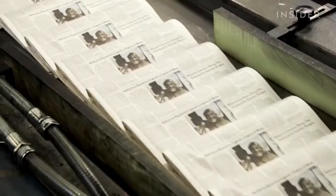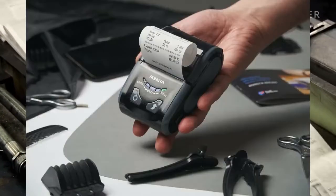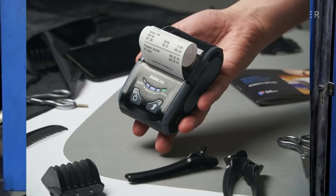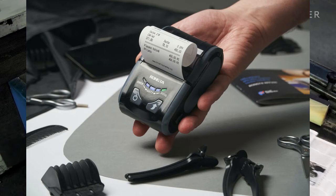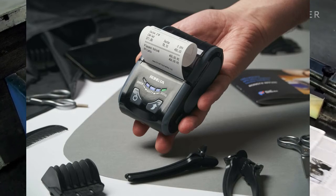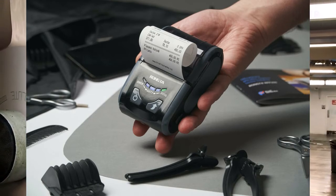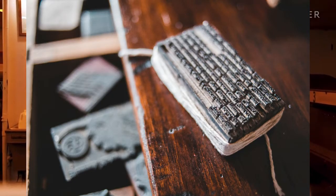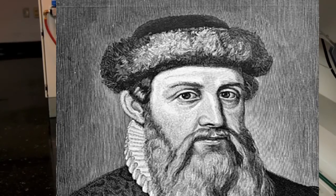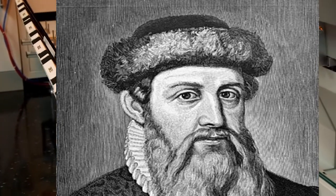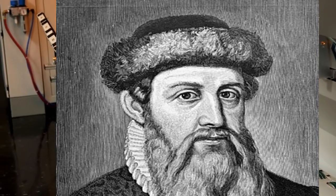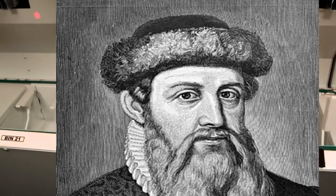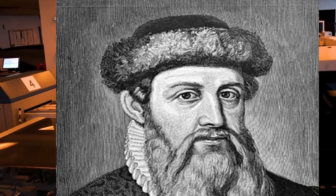Later developments in printing technology include the movable type invented by Baishun around 1040 AD, and the printing press invented by Johannes Gutenberg in the 15th century. Gutenberg was an expert in the art of polishing stones, and with this knowledge, he adapted existing technology to design his innovation. The first printed book with the new system was the Bible.